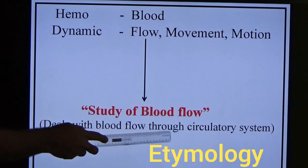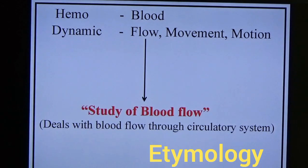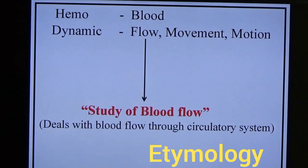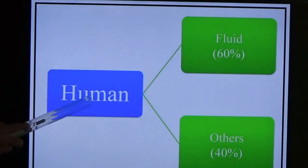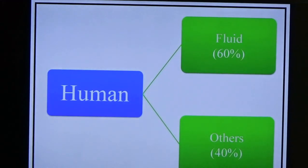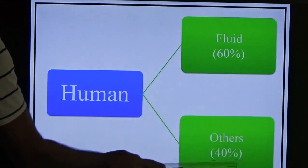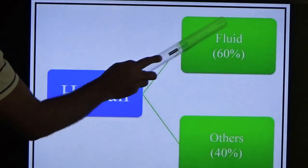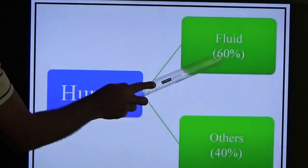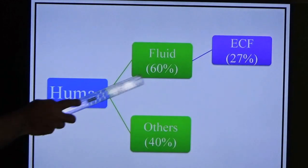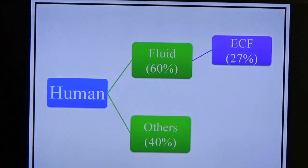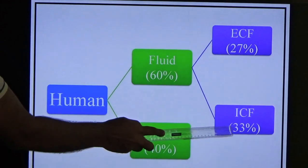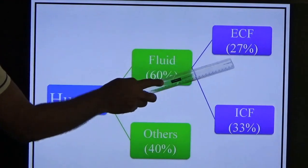As we know in physiology, blood is a fluid connective tissue. For our purpose, the human body is divided into two parts: the fluid part and the solid part. The solid part includes skeletal bones and tissues. The fluid part makes up 60% and the other part 40%. The fluid part is further divided into extracellular fluids and intracellular fluids — intracellular fluid is 33% and extracellular fluid is 27%.